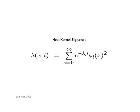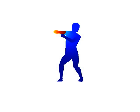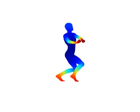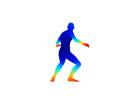As local feature descriptors, multiscale heat kernel signatures have been recently proposed. These signatures are related to heat diffusion properties of the shape and are intrinsic. Consequently, heat kernel signatures are invariant to isometric deformations.